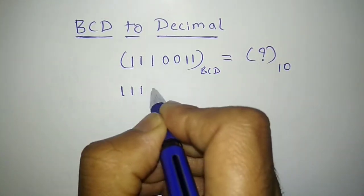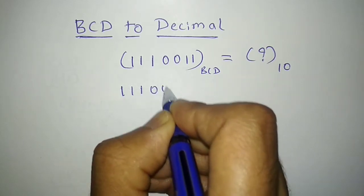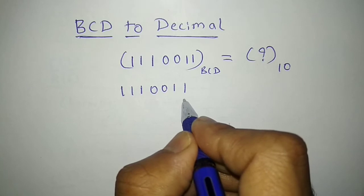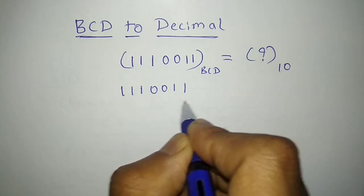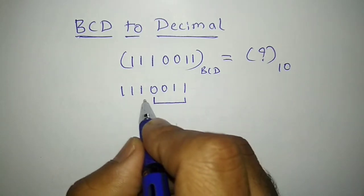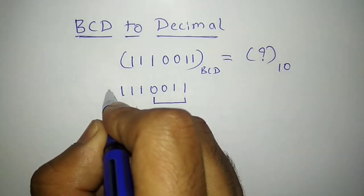So I have to group this number starting from LSB as 4 digits. So starting from this position, I would group them as 4 digits. So here I have only 3 digits, I would add 0 to the extreme left and group them as 4 digits.